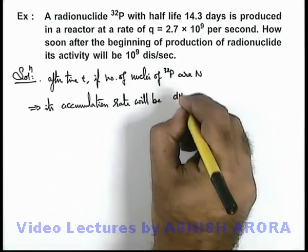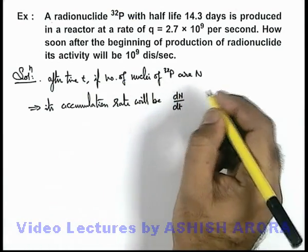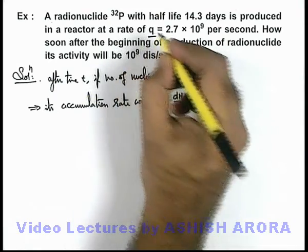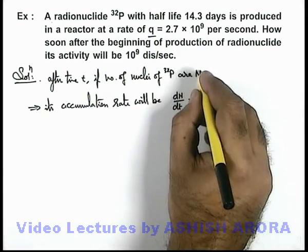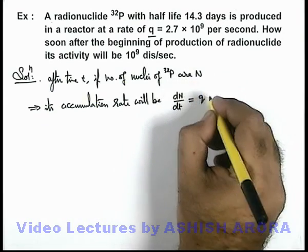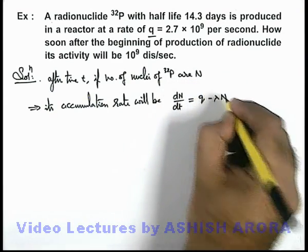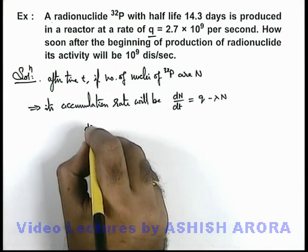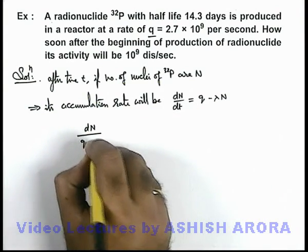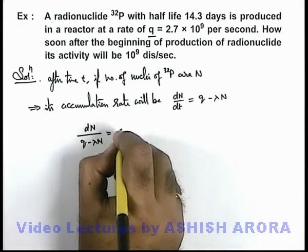The accumulation rate is the production rate minus the decay rate. Given that the nuclei are being produced at a rate of q nuclei per second, and if at time t, N nuclei are there, the decay rate will be λN. So we can rearrange the equation: dN/(q - λN) = dt.